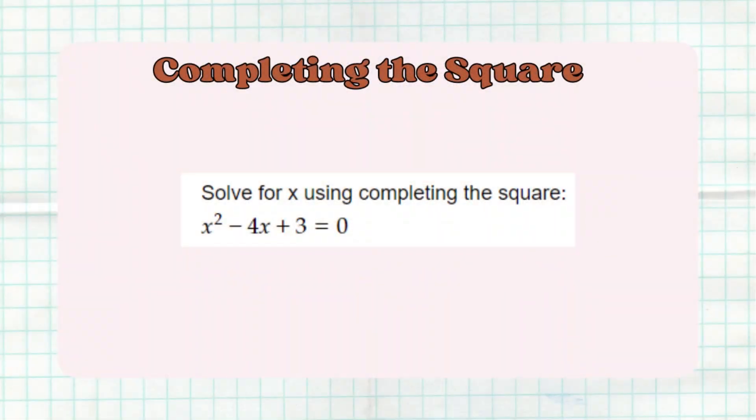Now moving to completing the square. Completing the square is similar to solving quadratic equations, but here they'll be specific and say to use completing the square. It's very crucial to understand how to solve for x using completing the square. It's easy marks — it can go for about five marks — so just understand the method. It's not always asked, but it's very good to know if they become specific.